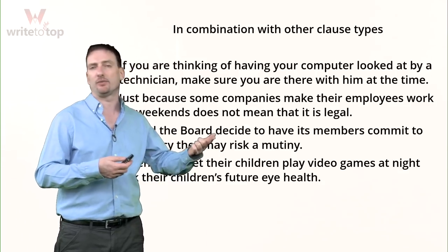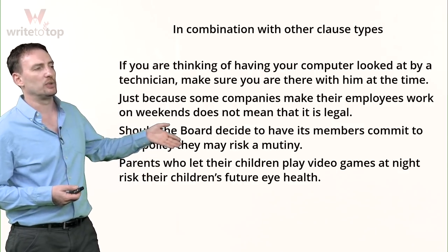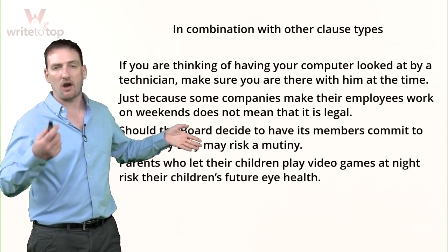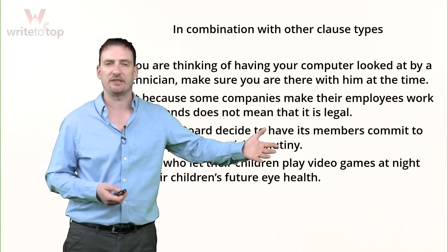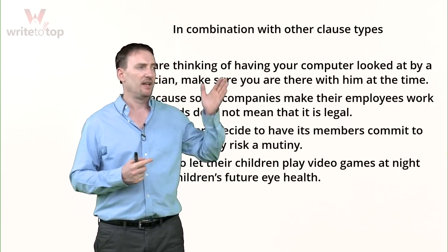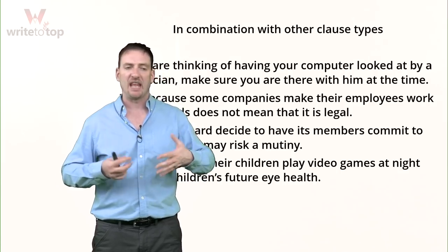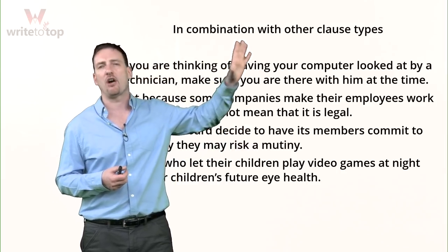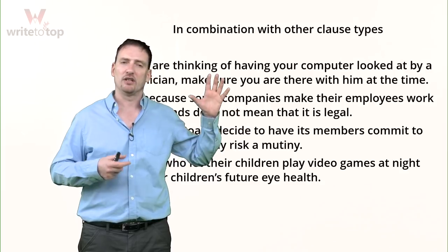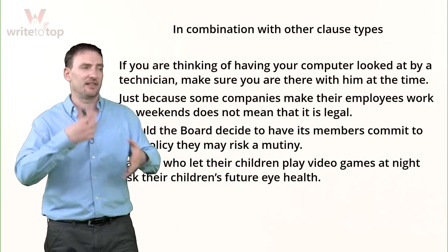The key is to recognize causative structures when you read them and use them correctly in your writing. For example, 'parents who let their children play' — who is the relative pronoun acting as subject, let is the causative verb, their children is the agent, play is base form. When you see too many verbs and can't find a subject for each one, think about the causative. Look for an agent doing an action and something causing that agent to act.